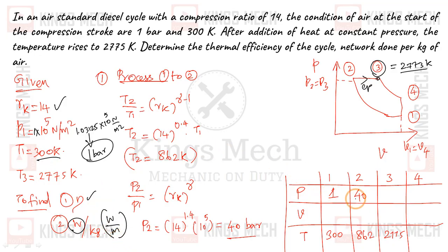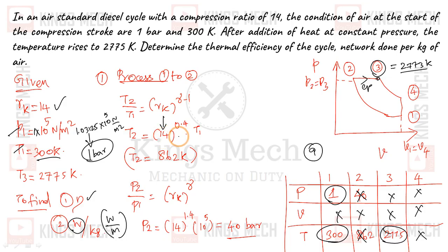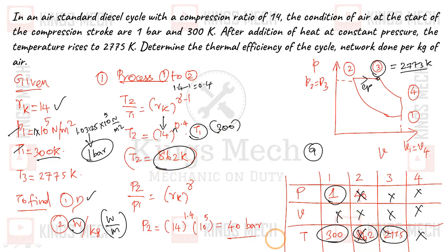First step: find T2. The relation is T2 divided by T1 equals RK to the power of gamma minus 1. RK value is 14, so 14 to the power of 0.4 multiplied by T1. T1 is 300 Kelvin. Substituting, I get T2 equal to 752 Kelvin.